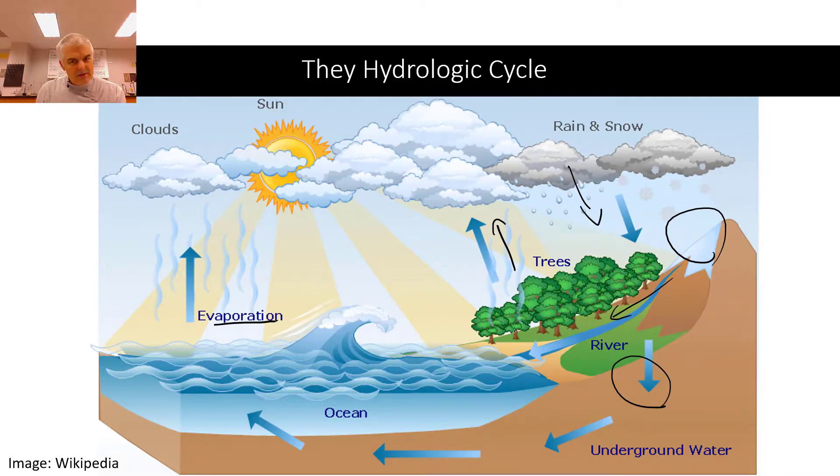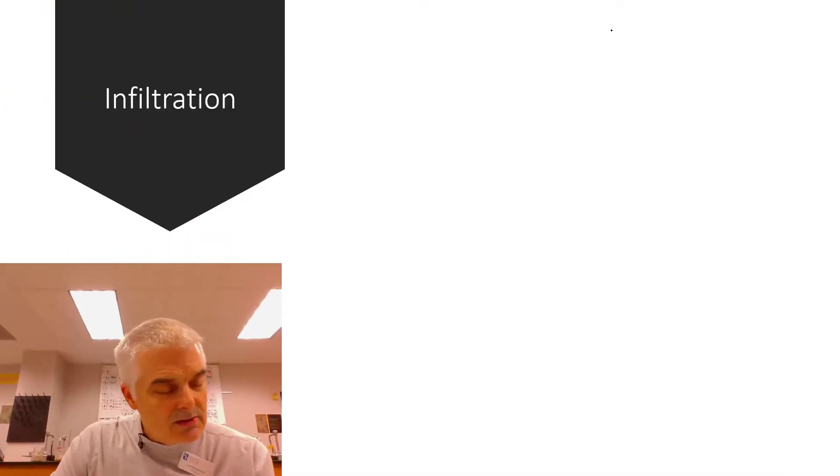It then goes downriver, and then there's all this underground water. Some people don't realize how very important the underground water is. That all flows essentially back into the ocean, sometimes through the underground system, and also through the overground system, the streams, lakes, et cetera. That's an important thing to understand as we go through the hydrologic cycle.